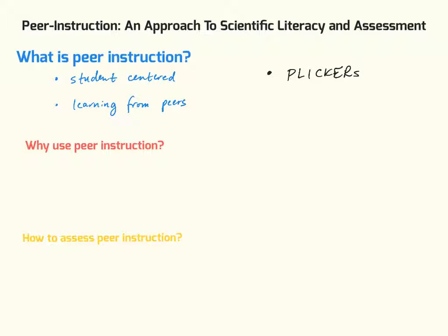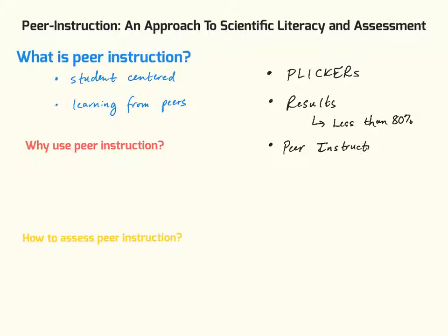I take a look at the results in real time because I can see them pop up on my iPad. If I get results that are less than 80% per question, I then open it up — and this is really where the peer instruction part comes in. I'll open it up for students and put a timer on, typically for three to five minutes, and ask them to discuss the question with the person they're sitting with or people they're sitting around.